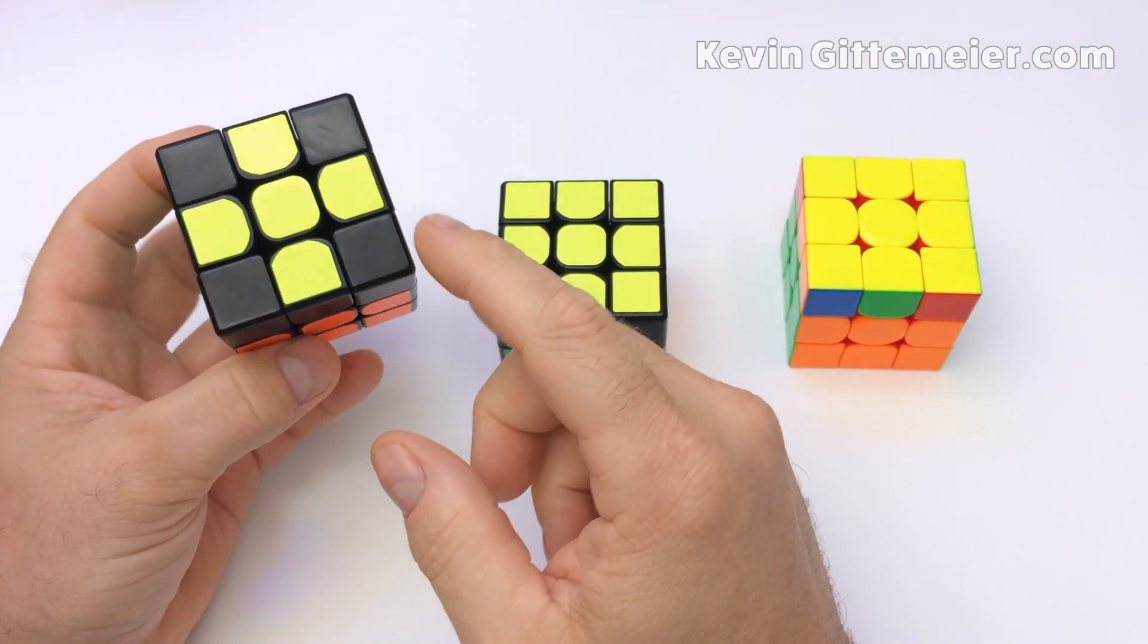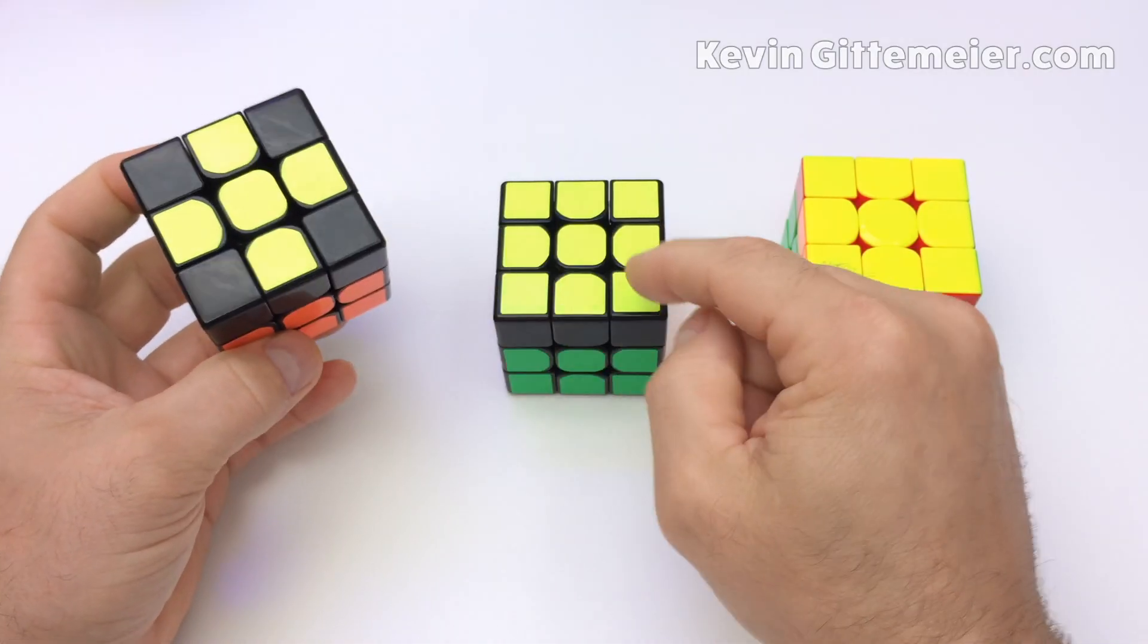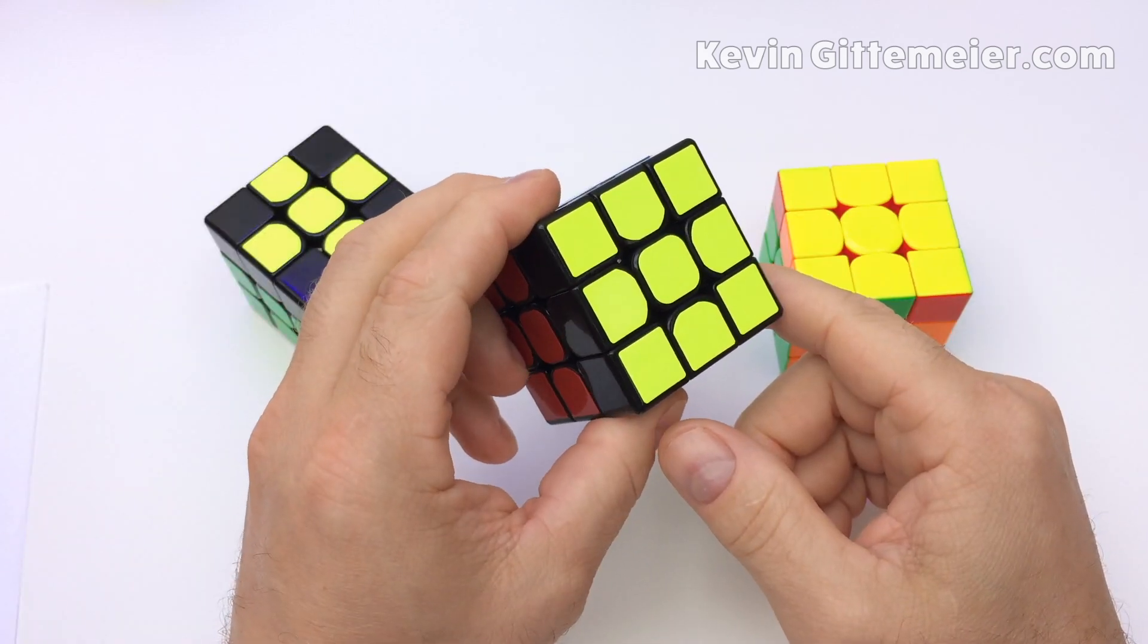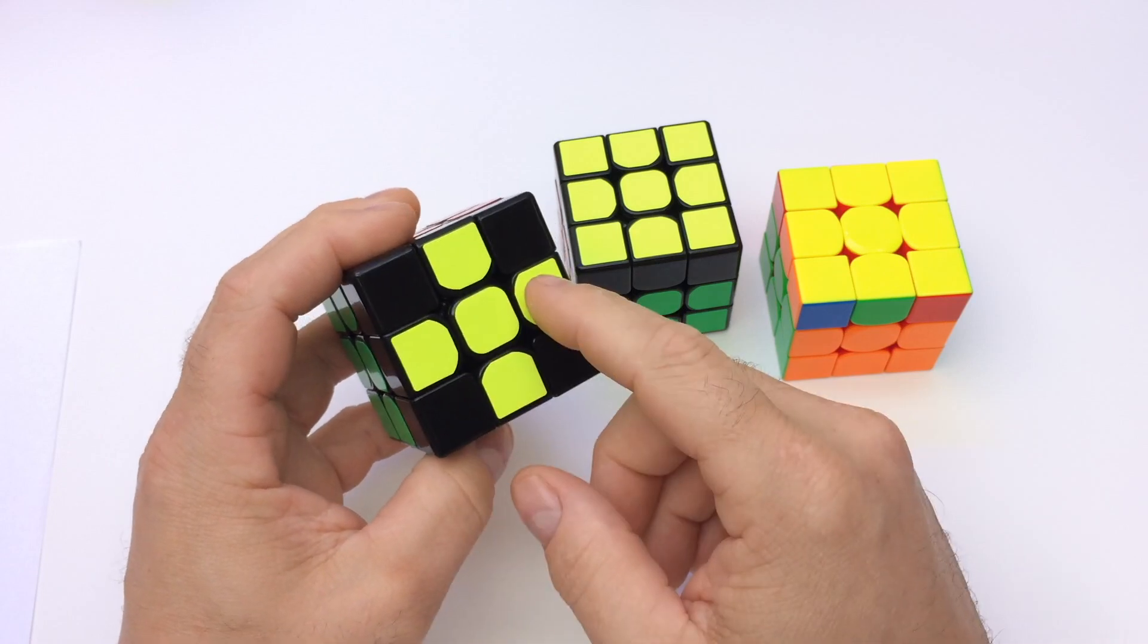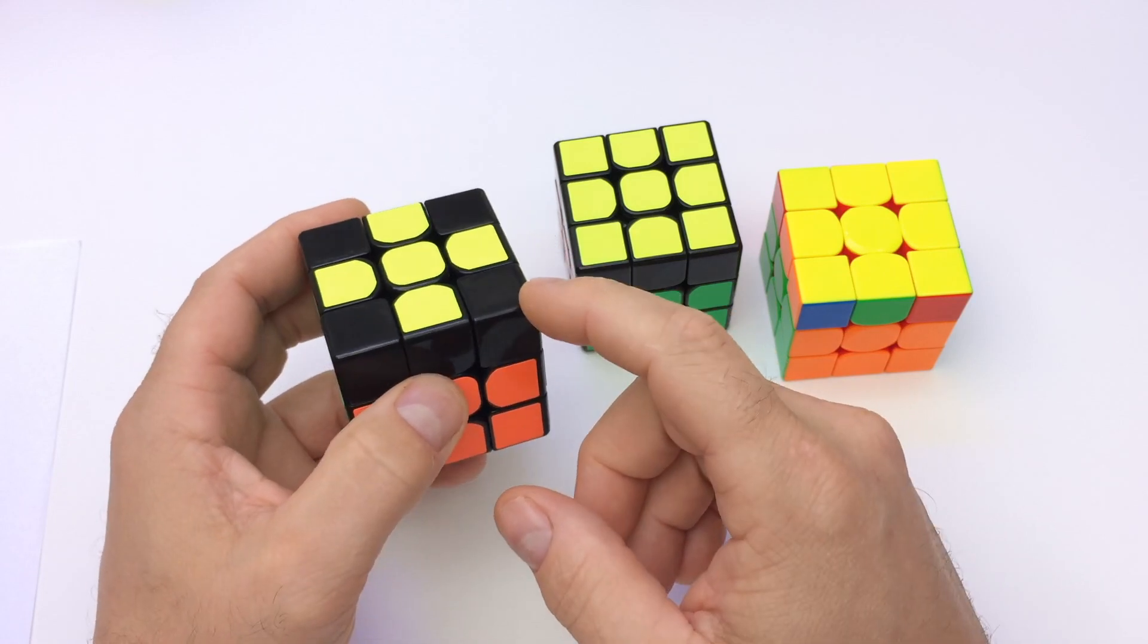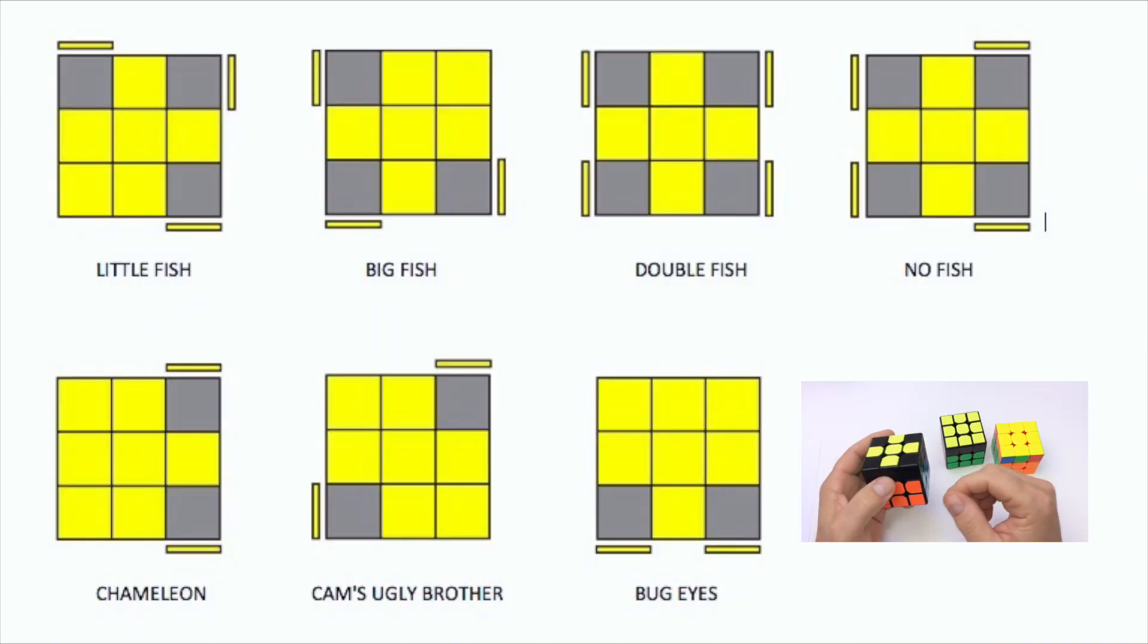Now we must orient all the corner pieces so the yellow sticker is on top facing up. This is called orient last layer or OLL. Once you have the yellow cross there can only be seven possible arrangements each with its own algorithm to get all the yellows on top. We are only going to learn two though. One forward and backward and one other easy one, a variation of the yellow cross algorithm.